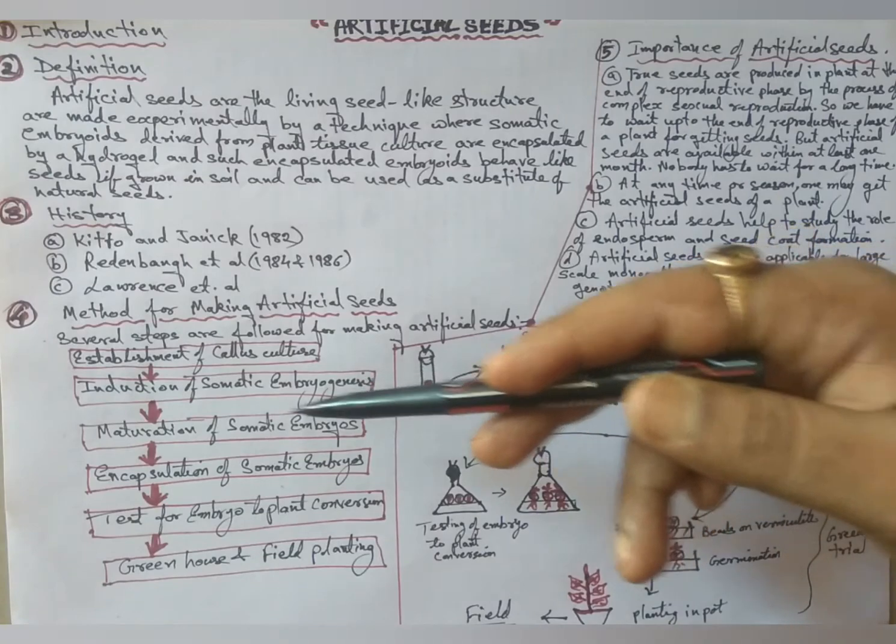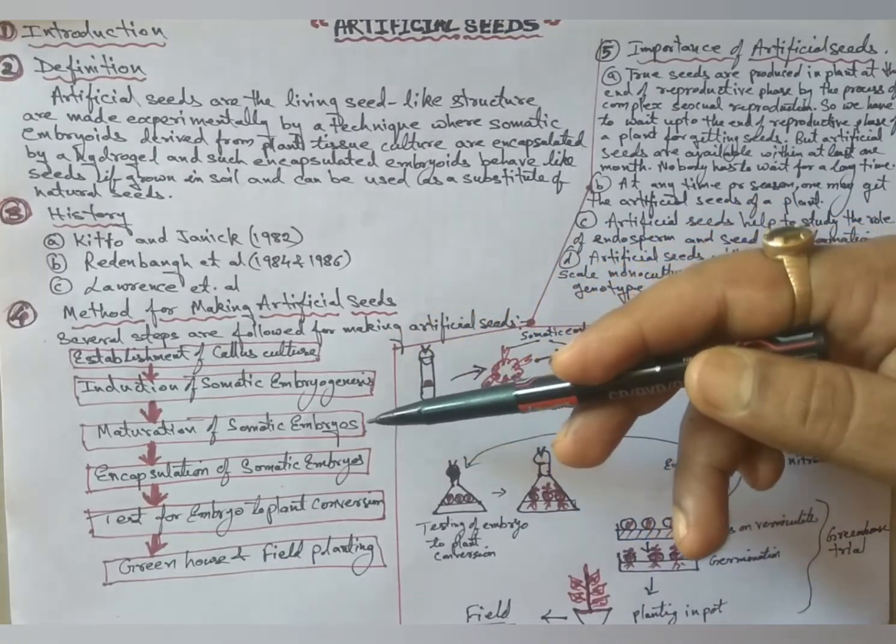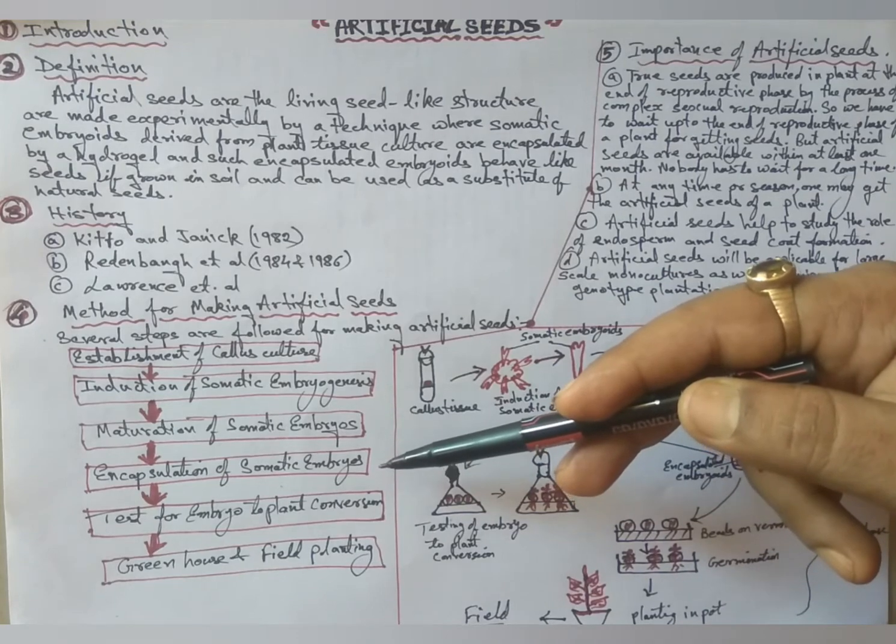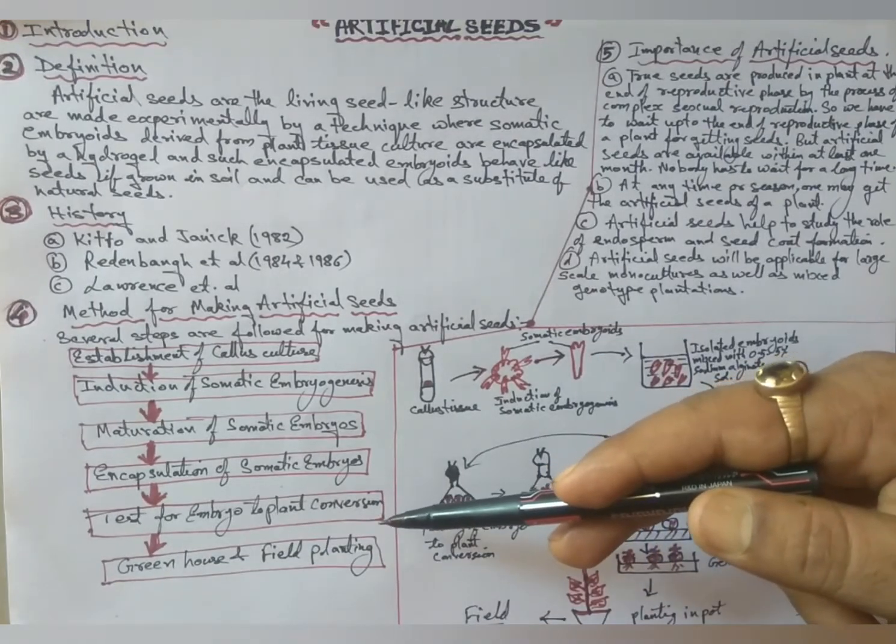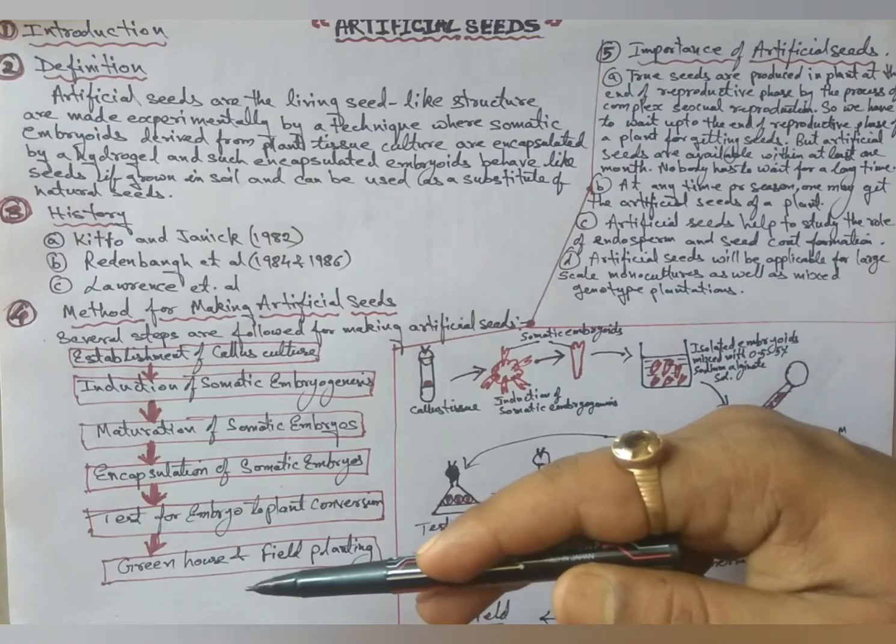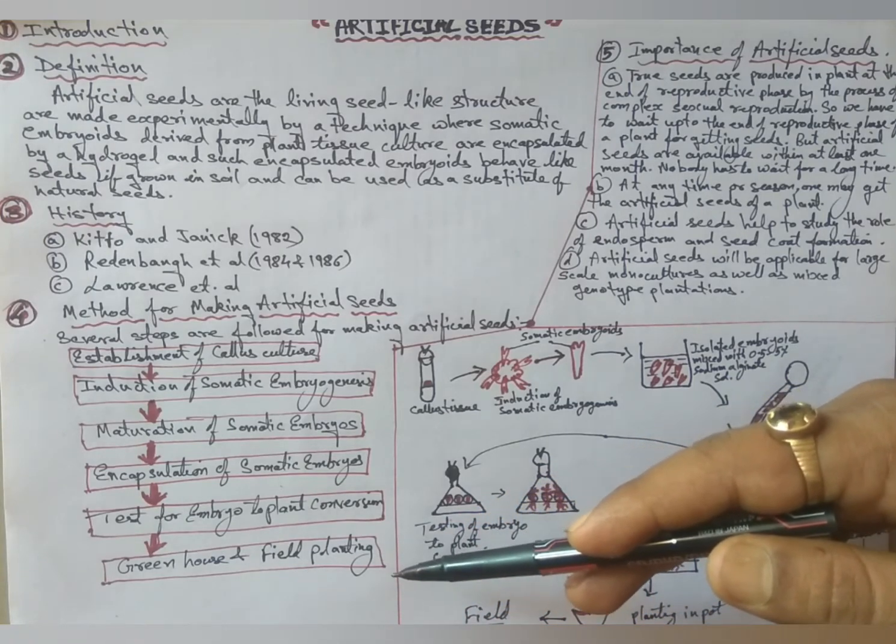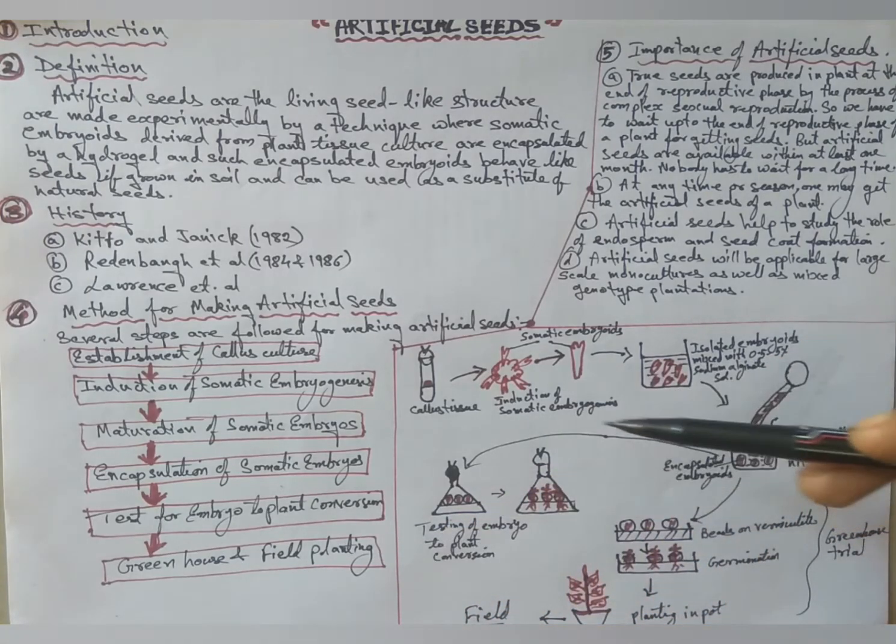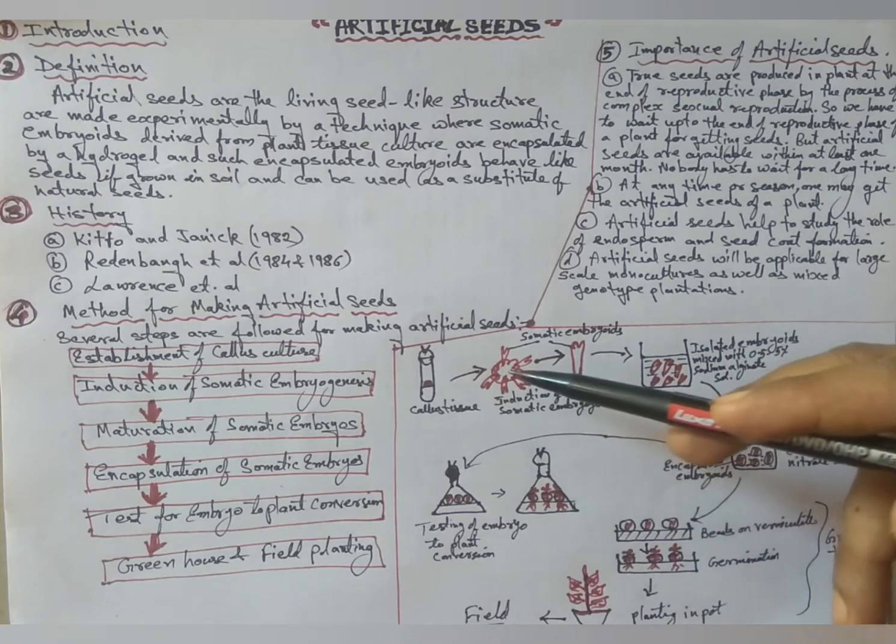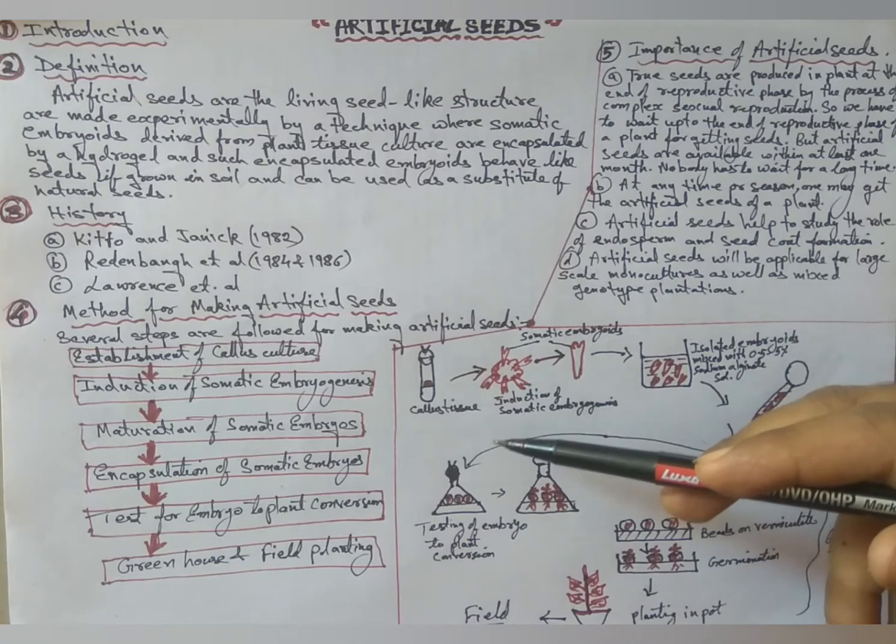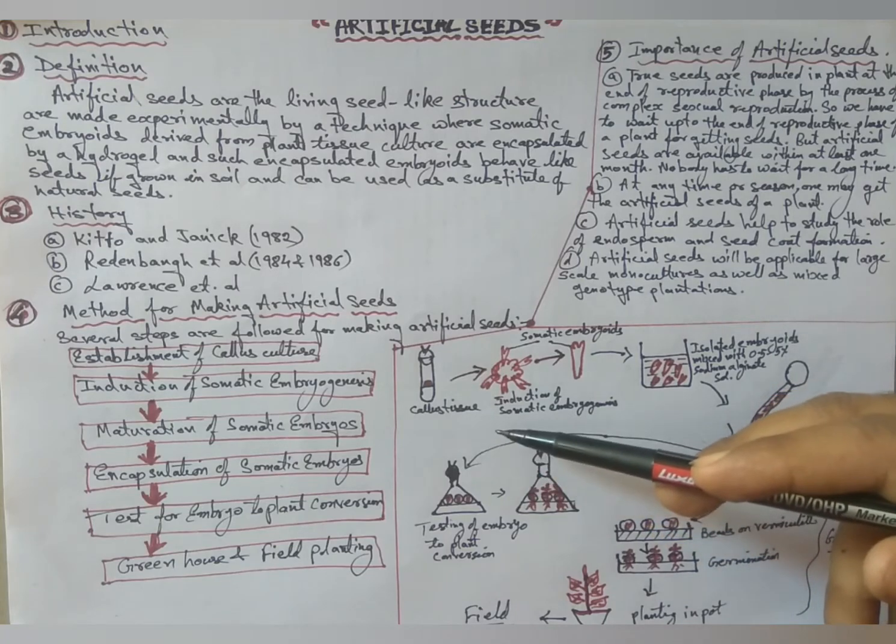After that, encapsulation of somatic embryos. Next, test for embryo to plant conversions, and lastly greenhouse and field planting. By this we will understand how artificial seeds are made from callus tissues.